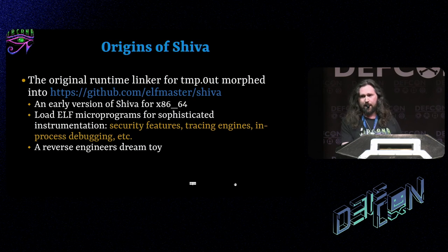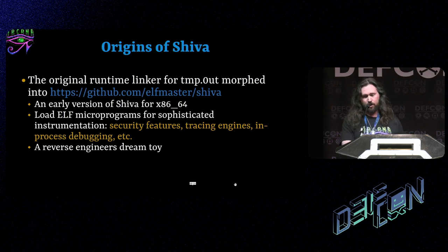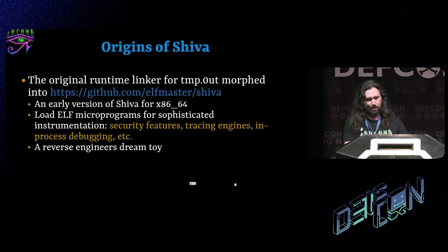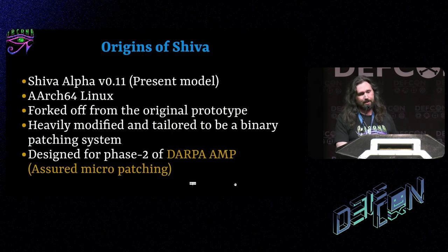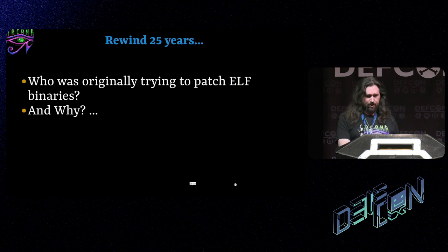That modular ELF virus loader interpreter ultimately morphed into the first version of Shiva, which was originally for x86-64. I gave a talk about it a year ago, but it's a completely different beast than what I'm talking about today. The original Shiva was for loading ELF microprograms — a custom dynamic linker that allowed you to load ELF microprograms to implement security features like control flow integrity hardening into the process address space. I actually just open sourced that today. The current version is Shiva Alpha version 0.11, forked off that original version and heavily modified to meet the requirements of the DARPA AMP program, specifically NASA.